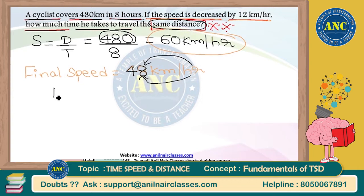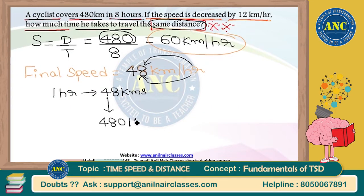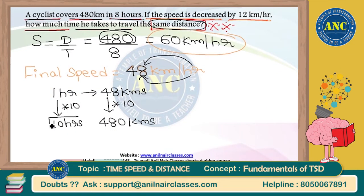In one hour it is 48 kilometers, but I need to cover 480 kilometers — the same distance. 48 is becoming 480, so multiply by 10: 48 into 10 is 480, and 1 hour into 10 is 10 hours. To cover the same distance of 480 kilometers, I will take 10 hours. That is the answer to this question.